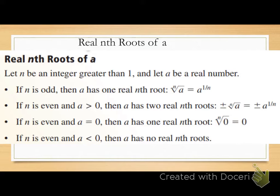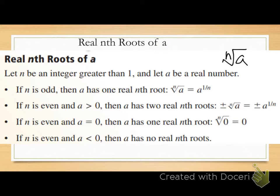If n is odd — index values like 3, 5, 7, 9, 11, 13, and so on — you're only going to have one real nth root, equal to the nth root of a, or a to the one-over-n. Now if your index is even — 2, 4, 6, 8, 10, 12 — we've got three options depending on what our radicand is.